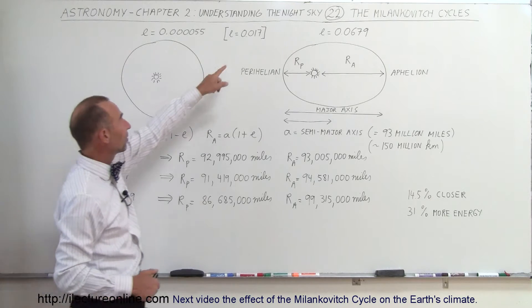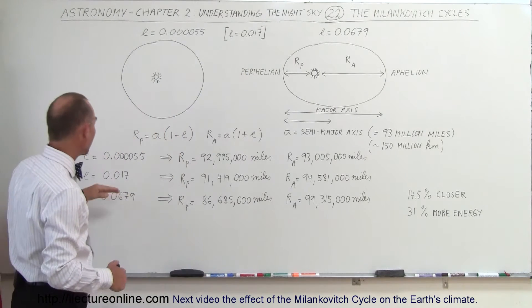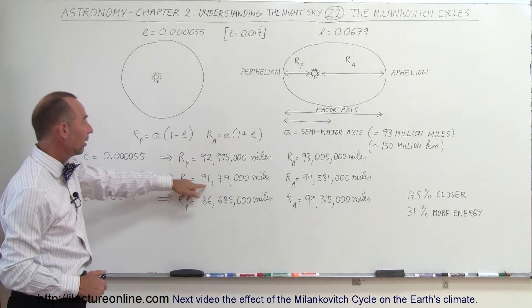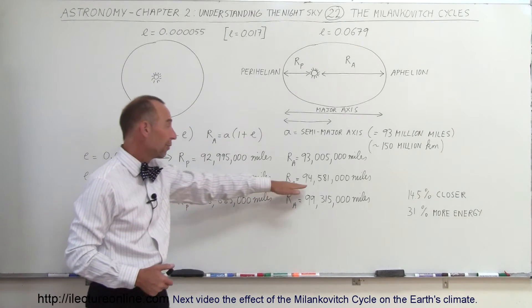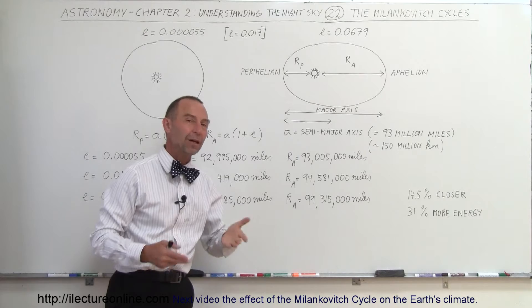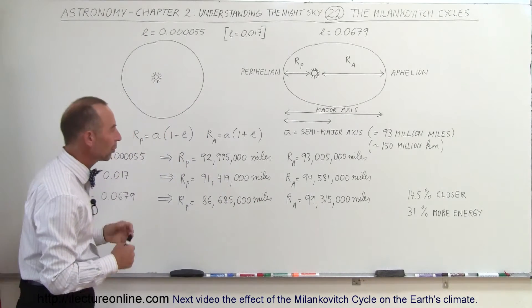Today, our eccentricity is at 0.017. That means that when we're closer to the Sun, we're about 1.5 million miles closer, and when we're farther from the Sun, we're about 1.5 million miles farther than the average distance between the Earth and the Sun.